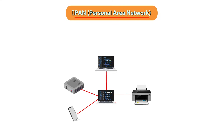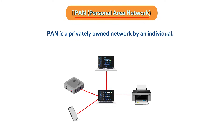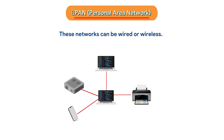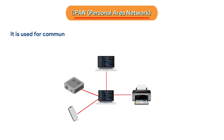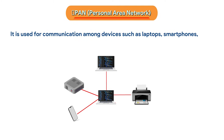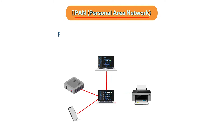PAN (Personal Area Network) is a privately owned network by an individual. These networks can be wired or wireless and are used for communication among devices such as laptops, smartphones, etc. PAN covers a range of less than 10 meters.